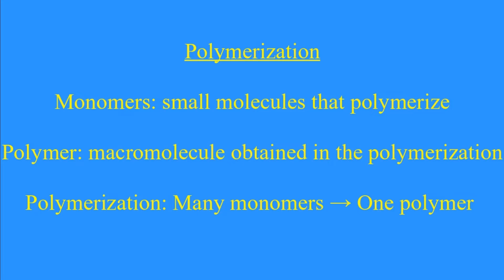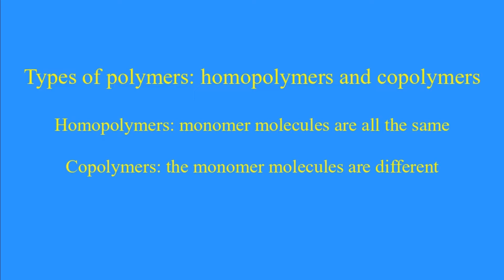Monomers are the molecules that polymerize. The polymer is the macromolecule that is obtained in the polymerization. So, polymerization is a chemical reaction where many monomers come together to form a polymer.